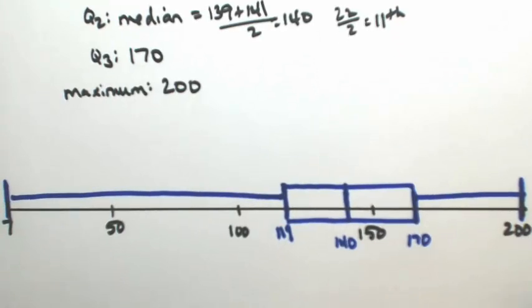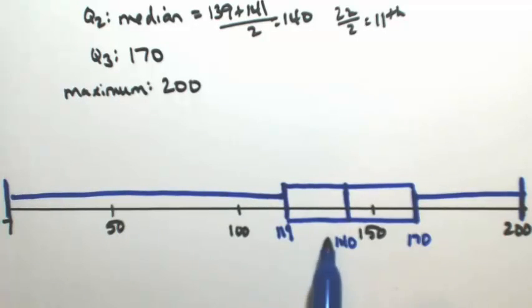Now what the box plot tells us is basically the distribution of the data. Anytime you have a really long whisker or a really long part of the box, that means you have a lot of variation within that part. So between 7 and 119, we have a lot of variation. Between 119 and 140, 140 and 170, we have about the same, and even really from 170 to 200.